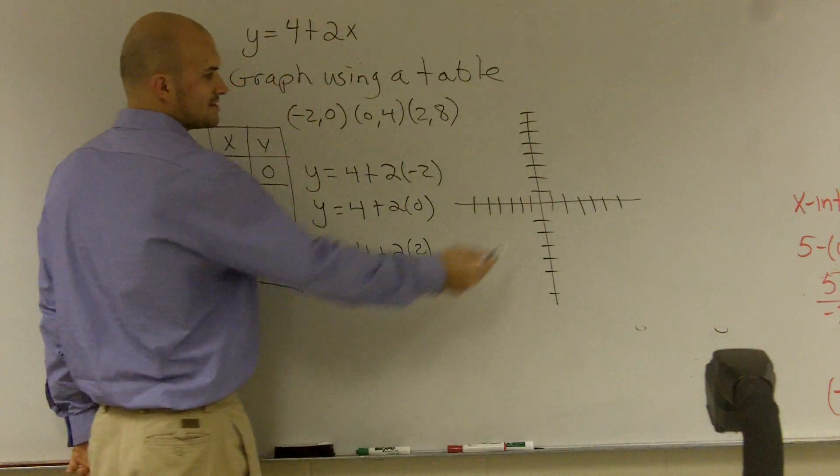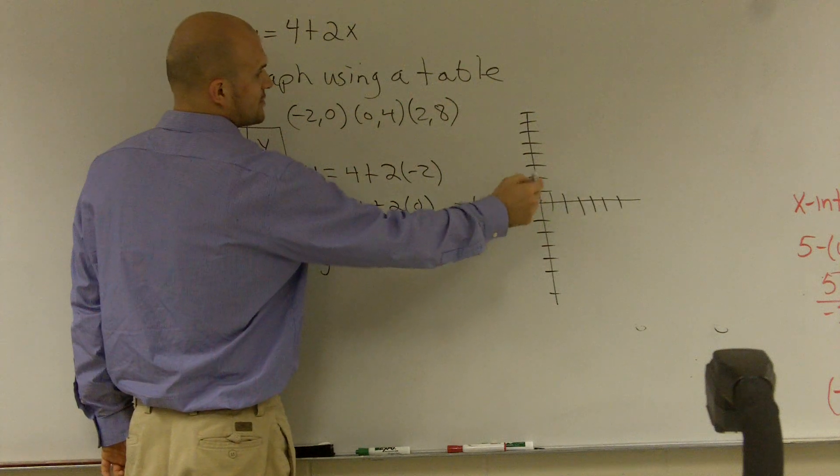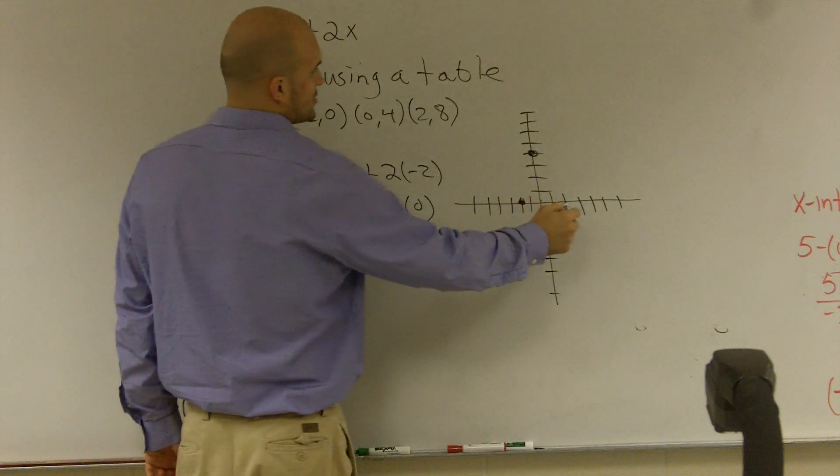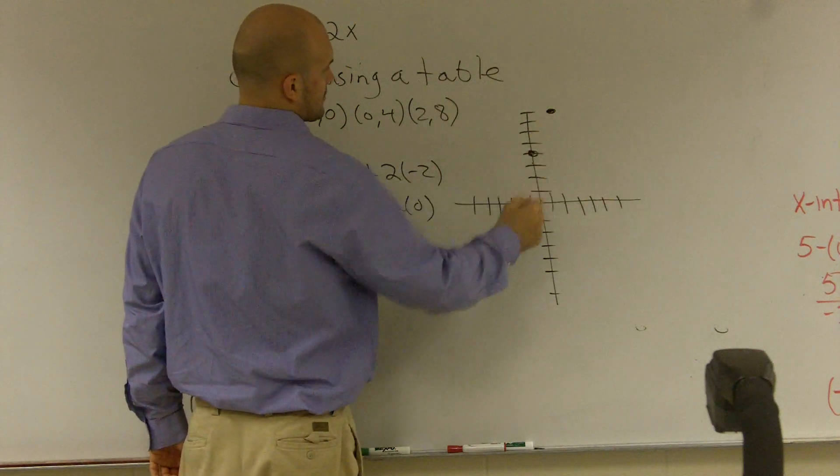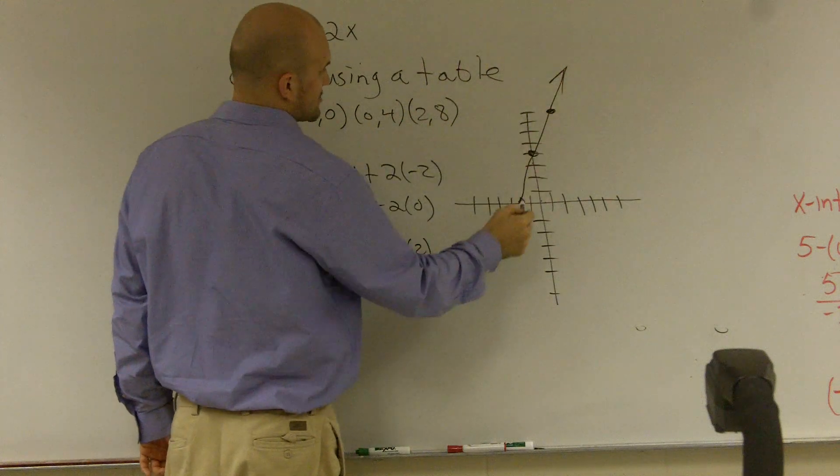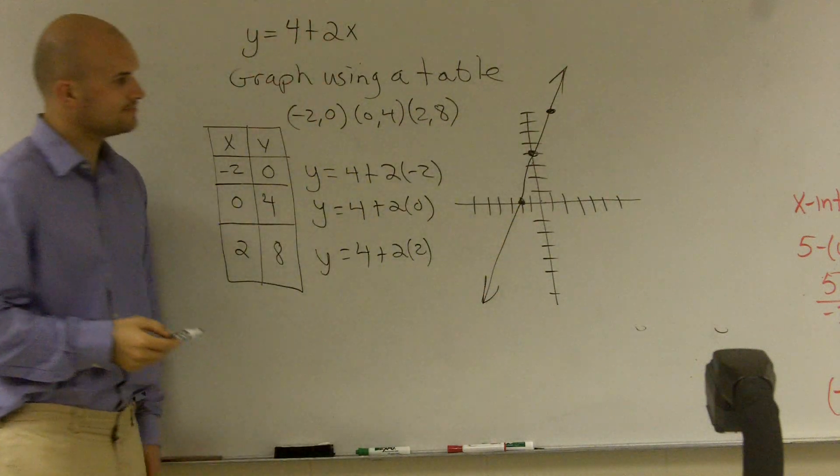So you just plot the points, negative 2, 0, 0, 1, 2, 3, 4, and 2, 8. And what you notice is you get the same graph again.